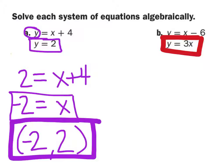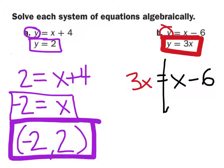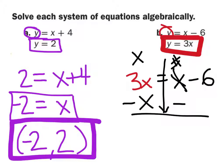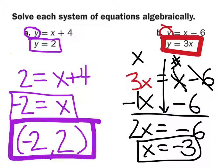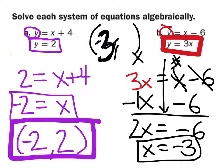Y is 3x, so let's replace y with 3x. So we have negative 3x equals x minus 6. Playing the switch and stay game: x's on the left, numbers on the right. 3x stays, x switches — so 3x minus 1x is 2x — and negative 6 stays. So 2x equals negative 6, and x equals negative 3.